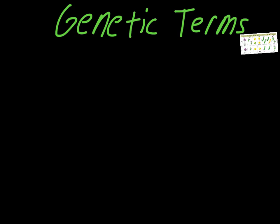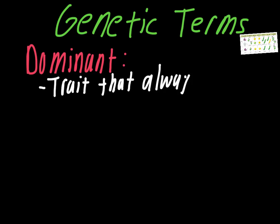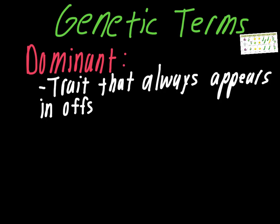We'll look at dominant first. So dominant will just be explained as a trait that always appears in the offspring if it's found in the parent.